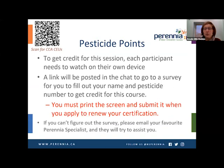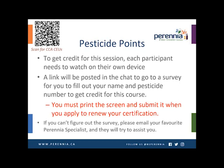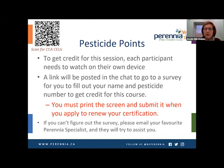For pesticide points, this session is worth one pesticide point. I will post a link in the chat — you need to click on that link to get credit for this session. Each participant needs to be watching from their own device, so if you have two people watching on the same computer, only one of you is going to get credit. Your Zoom name should be the name on your pesticide license. Fill out your name, address, and pesticide certificate number, then print the screen before submitting, and submit that printed copy when you apply to renew your certification. For all you CCAs out there, you can scan the QR code in the top left corner of your screen to sign in — it will also be posted at the end of the session.